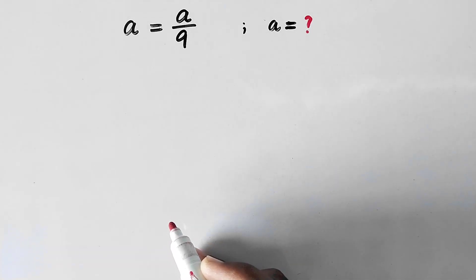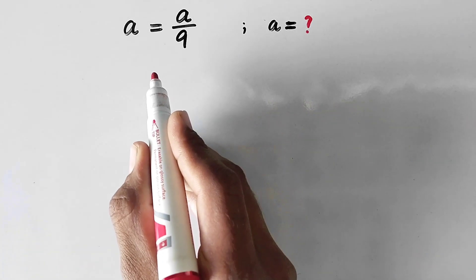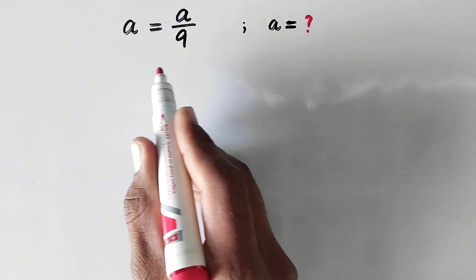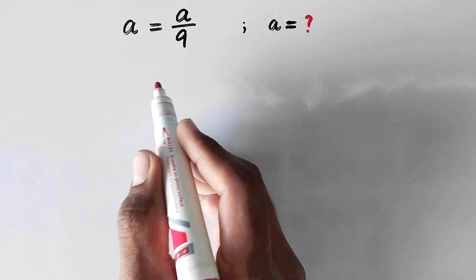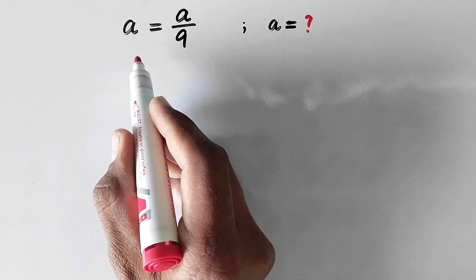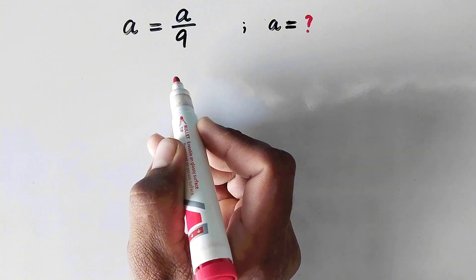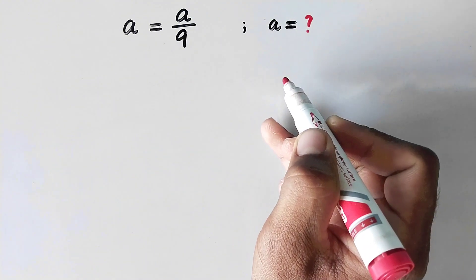Hello everyone and welcome to explored maths. In this video we are going to solve a very nice lumped math question that is if a is equal to a upon 9, then what is the value of a?